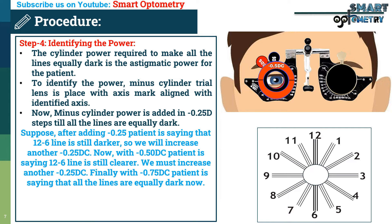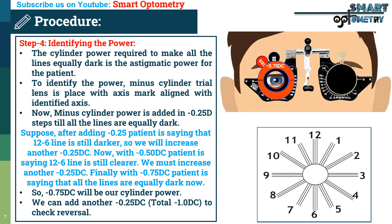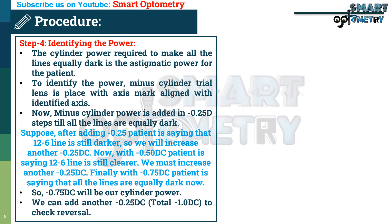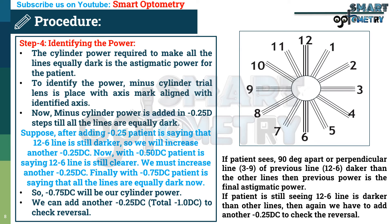We increase the cylinder by another 0.25 diopter. Finally, with minus 0.75 diopter cylinder, the patient reports all lines are equally dark, so minus 0.75 diopter becomes the cylinder power. We can add another minus 0.25 diopter to check reversal. If the patient then sees the 90-degree apart line (the 3–9 line) darker, the previous power is the final astigmatic power. If the 12–6 line is still clearer, we add another minus 0.25 diopter and recheck.